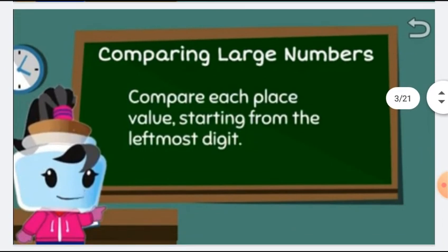What is comparing large numbers? We compare each place value starting from the leftmost digit. That means with 3-digit numbers, we will compare first the hundreds place value, then the tens, and then the ones.